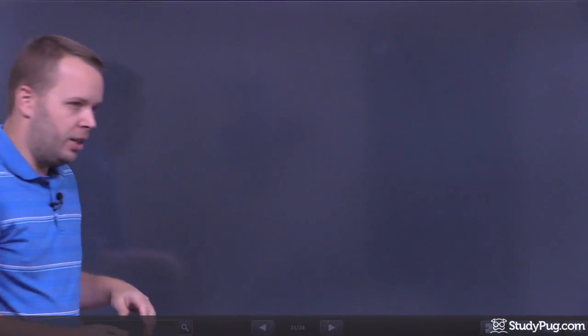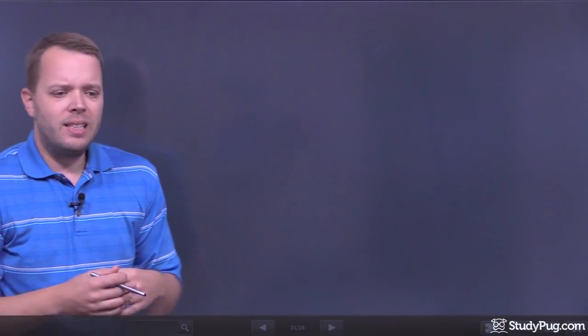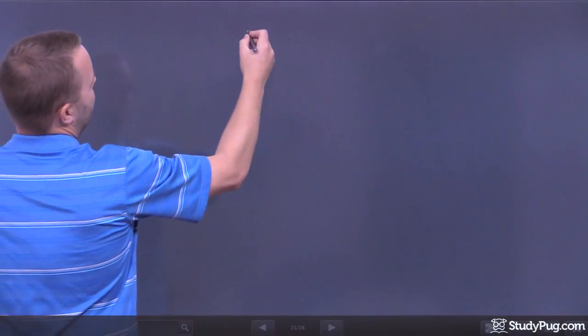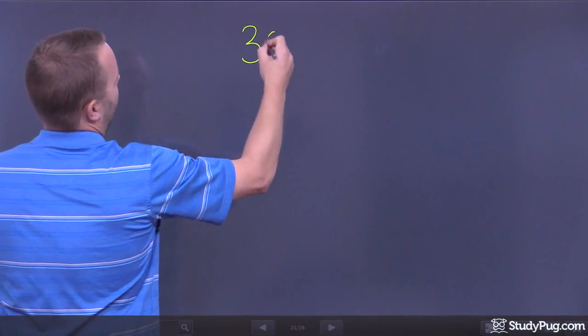So, the other method we're going to use, or we can try, is, well, sometimes it's called the ladder method. So, the ladder method works something like this. It's more like a division-based thing. So, let's say I start with the number 30.